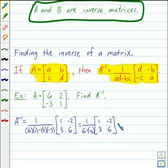And continuing on, our fraction will be 1 twelfth. 6 minus negative 6 is the same as 6 plus 6. So we're going to multiply 1 twelfth times our matrix, 1, negative 2, 3, 6. When we do that,